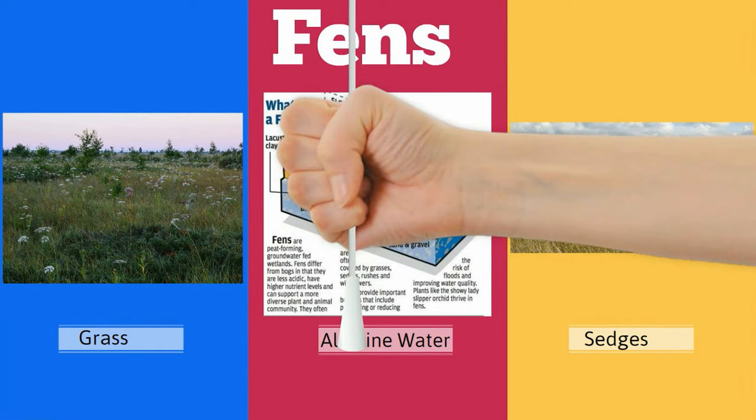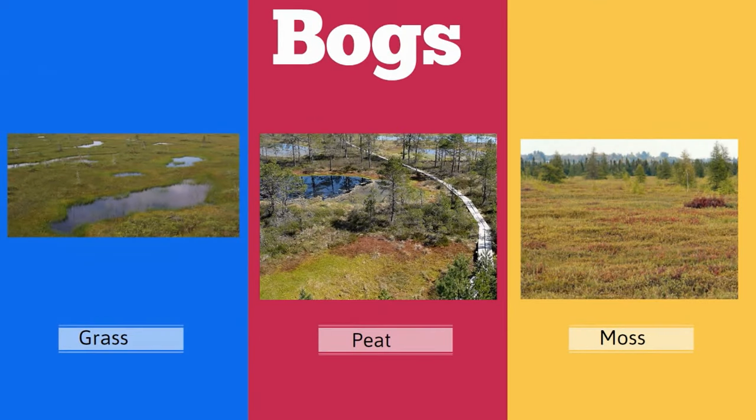A bog is a wetland that accumulates peat, which is a deposit of dead plant material. Often you can find mosses in a bog.